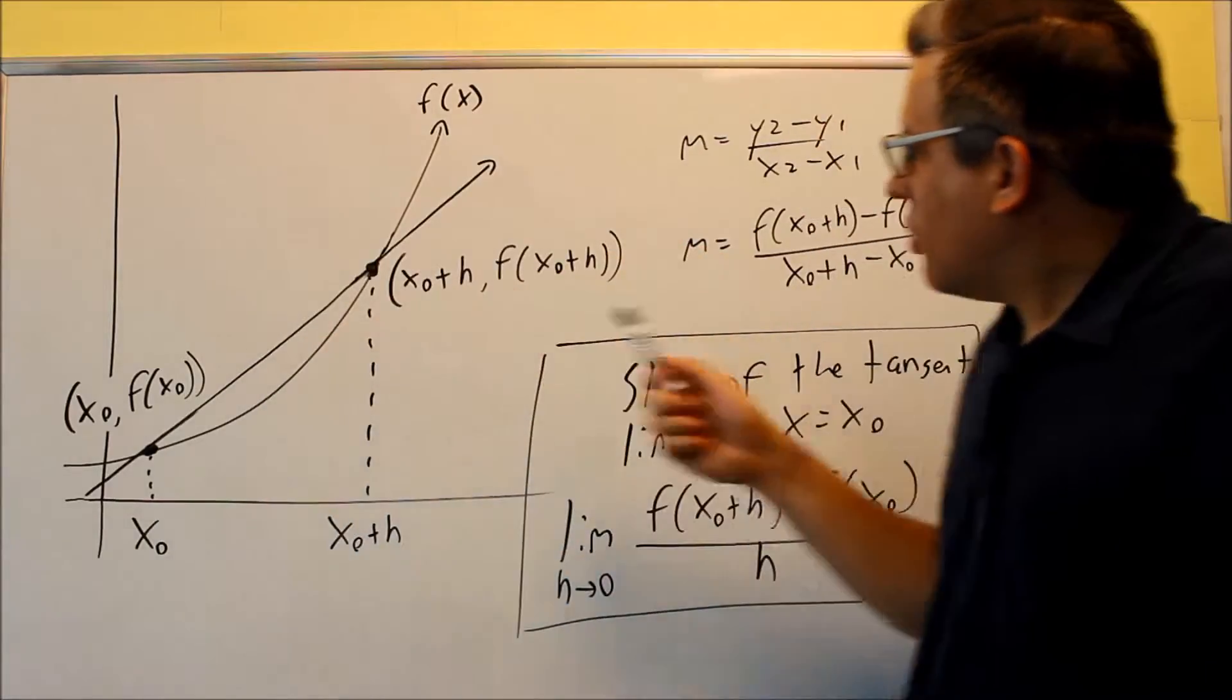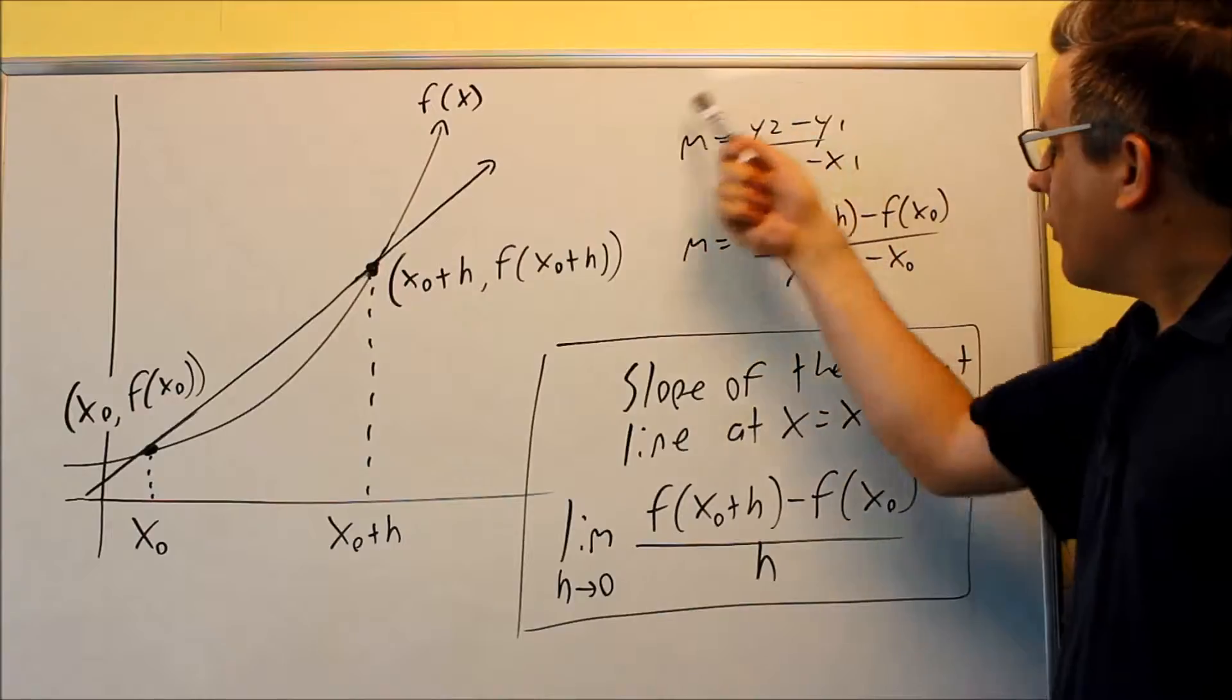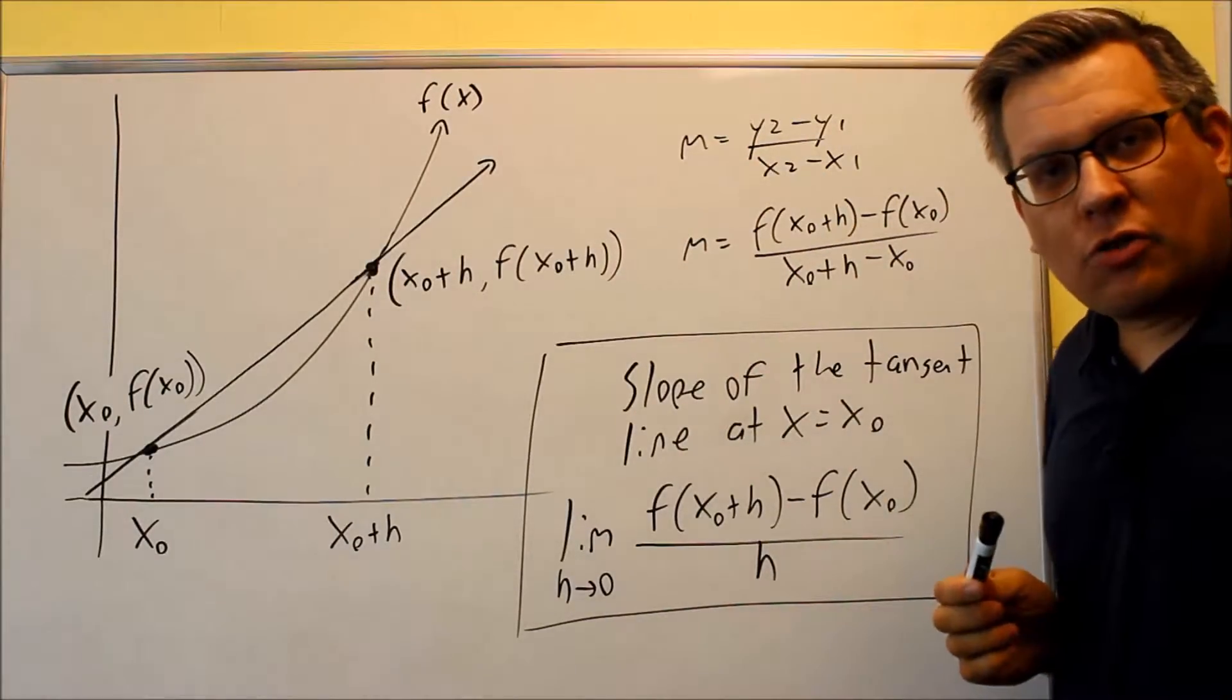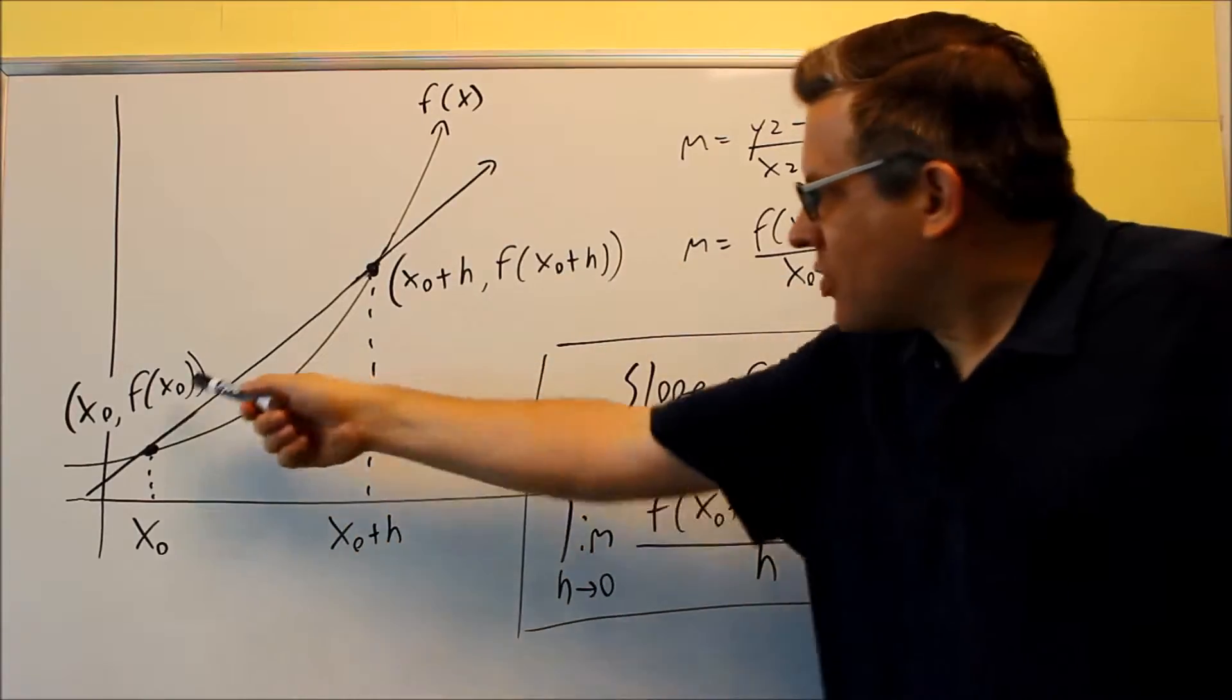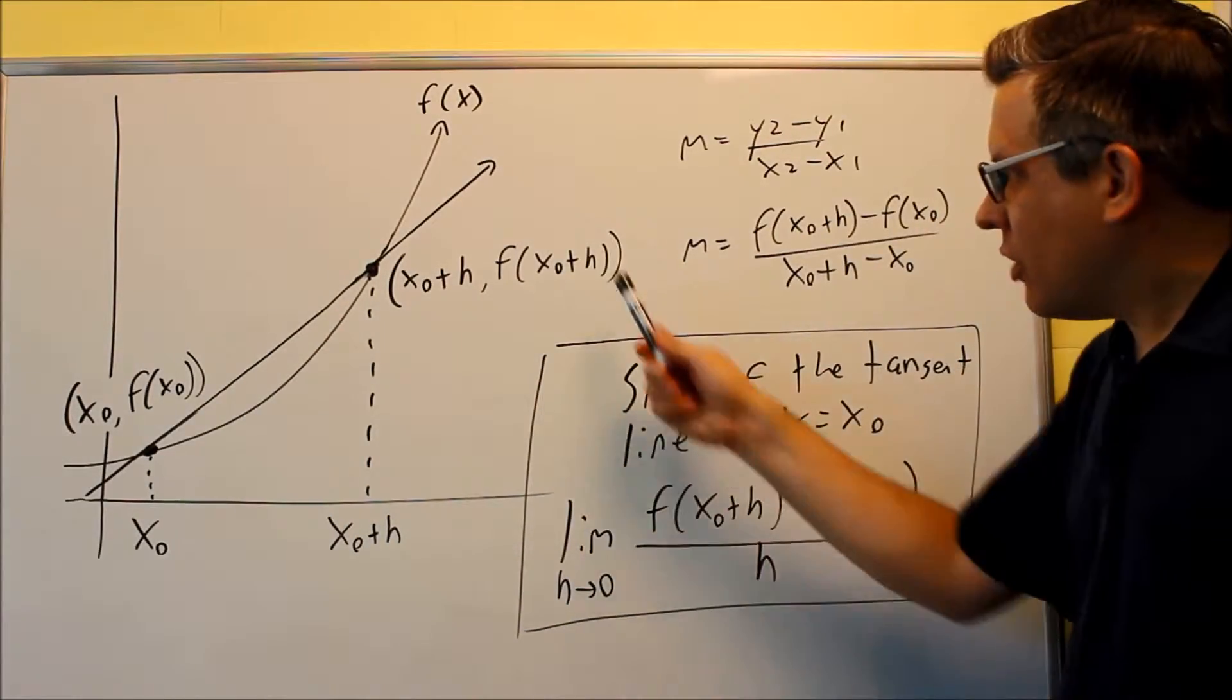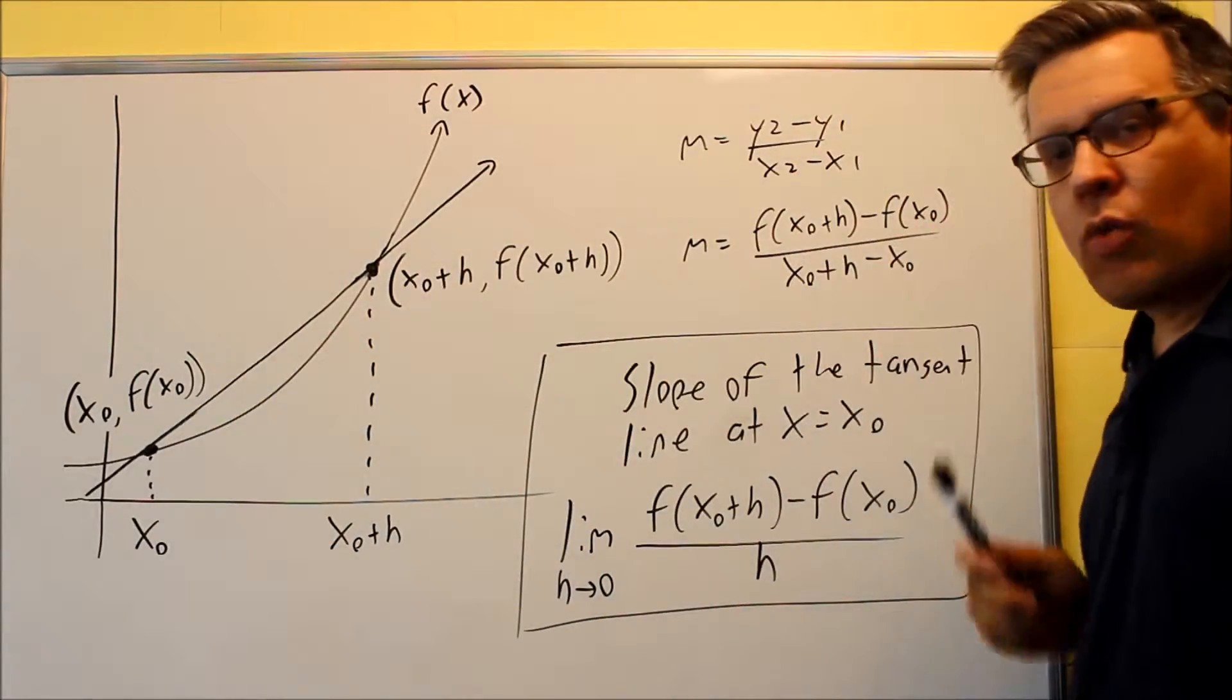We're going to take this information and we're going to use a formula that should look familiar to you. We're going to use a formula that you would have seen in pre-calculus. This is the slope formula if you're given two points. And we're going to put this information into the formula. On top, we have the change in y's. We have our two function notations here, that's the y values.